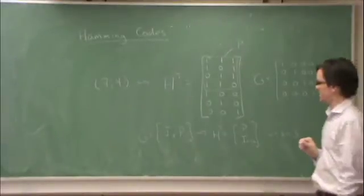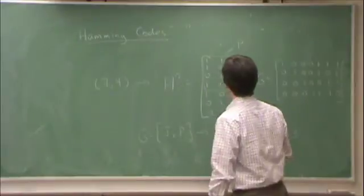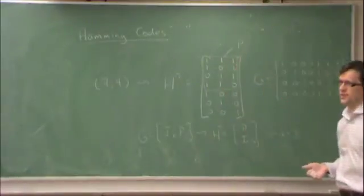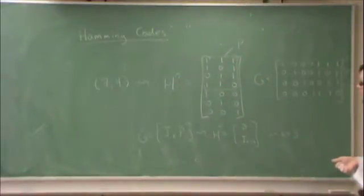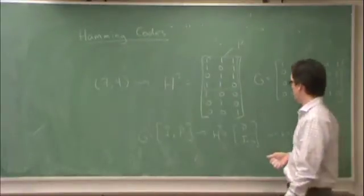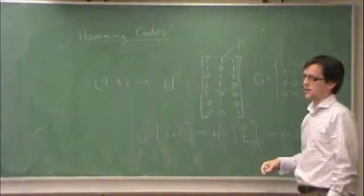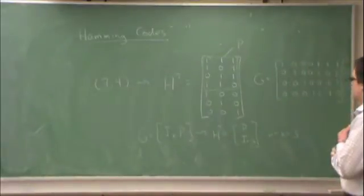So as you may have guessed, the Hamming Codes are not unique. I could permute these rows in any way. In fact, I can even go for a non-systematic code by permuting all of the rows. So there's many ways to form a Hamming code.